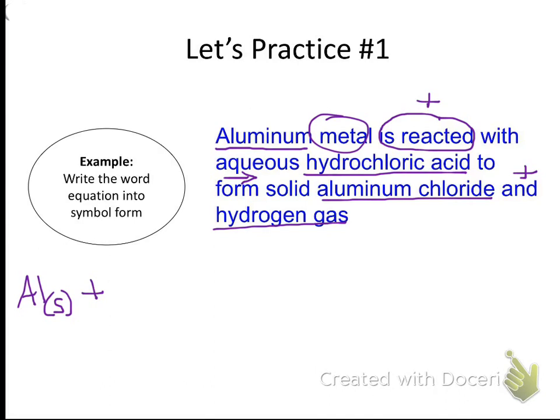We haven't named acids, so I'm going to tell you that hydrochloric acid is HCl. And if you ever come across anything that we haven't named, like an acid, just ask and I'll give you the formula. It says it's aqueous, so AQ. Alright. 'To form' - this is where our arrow goes.